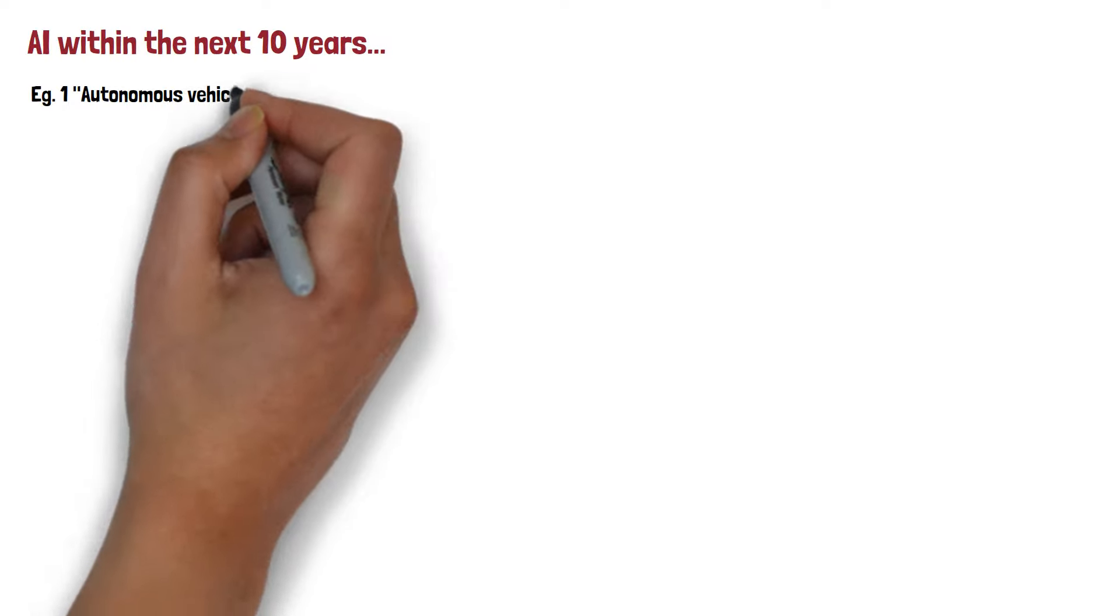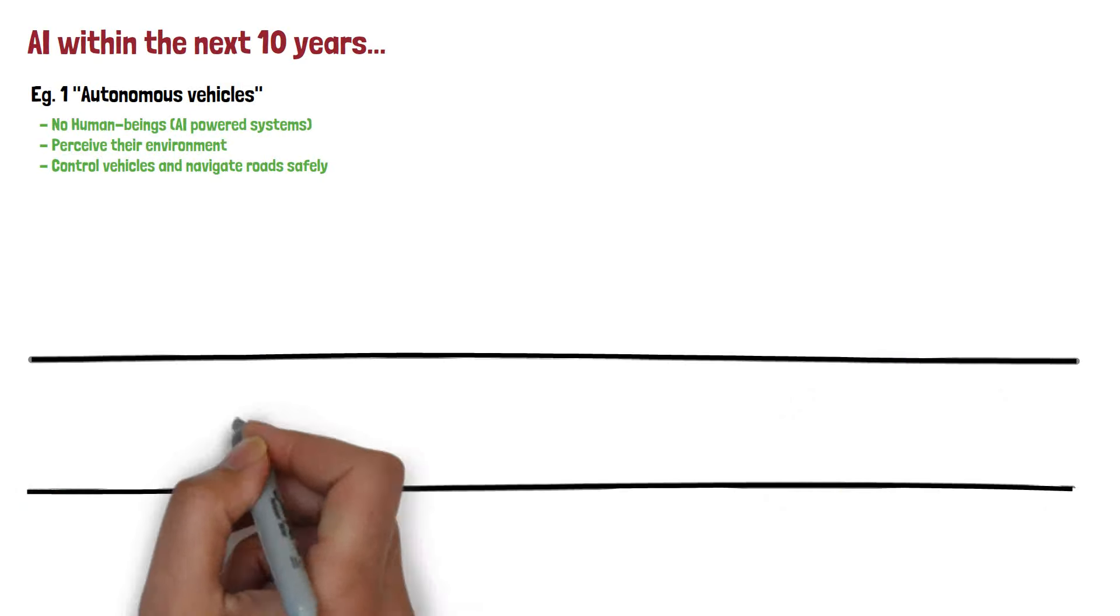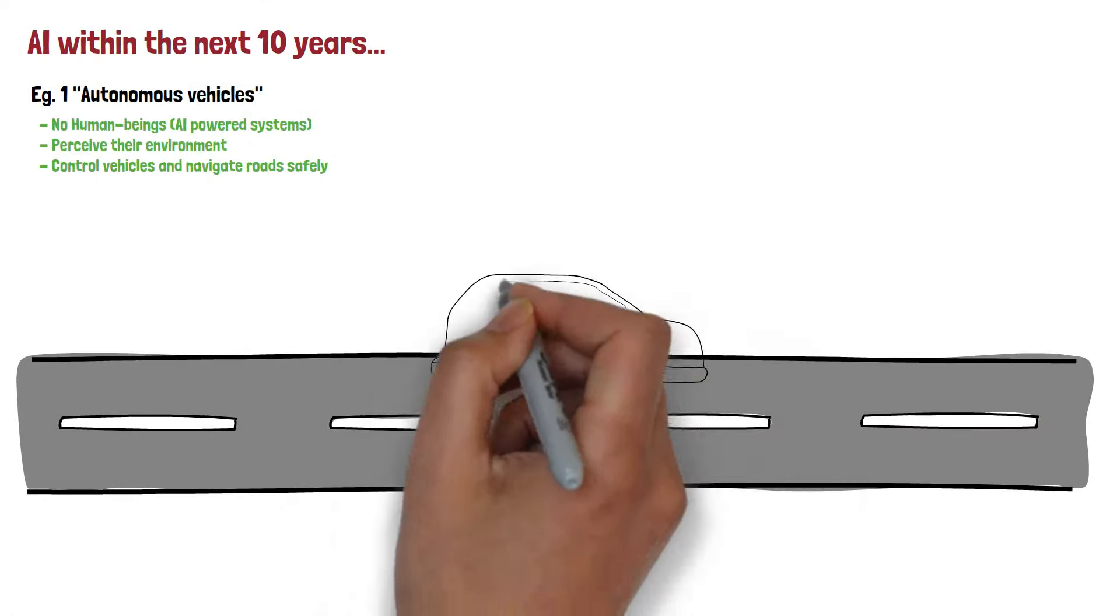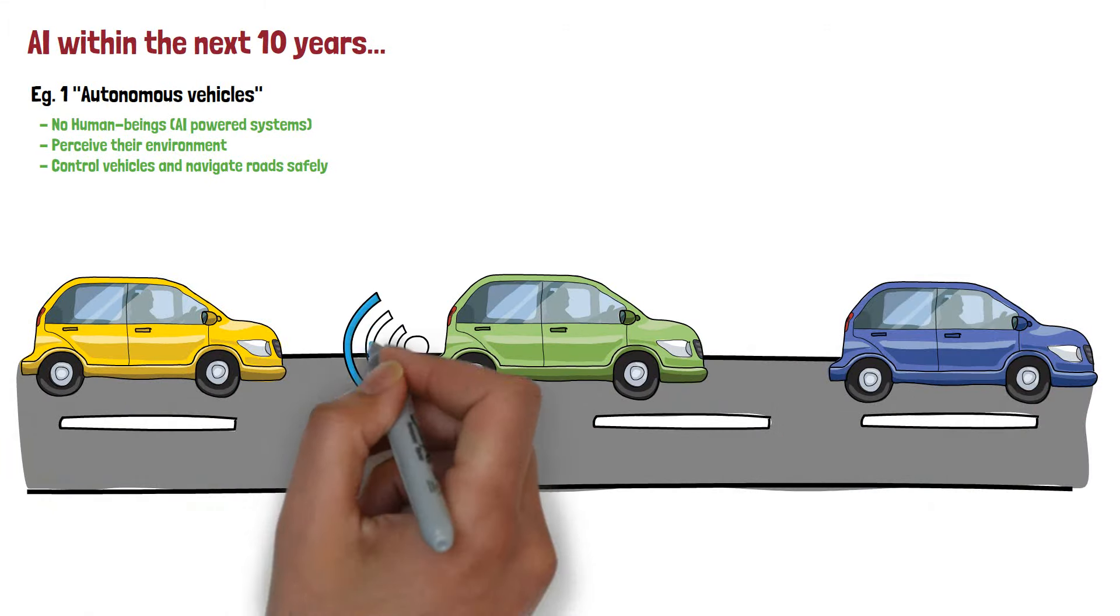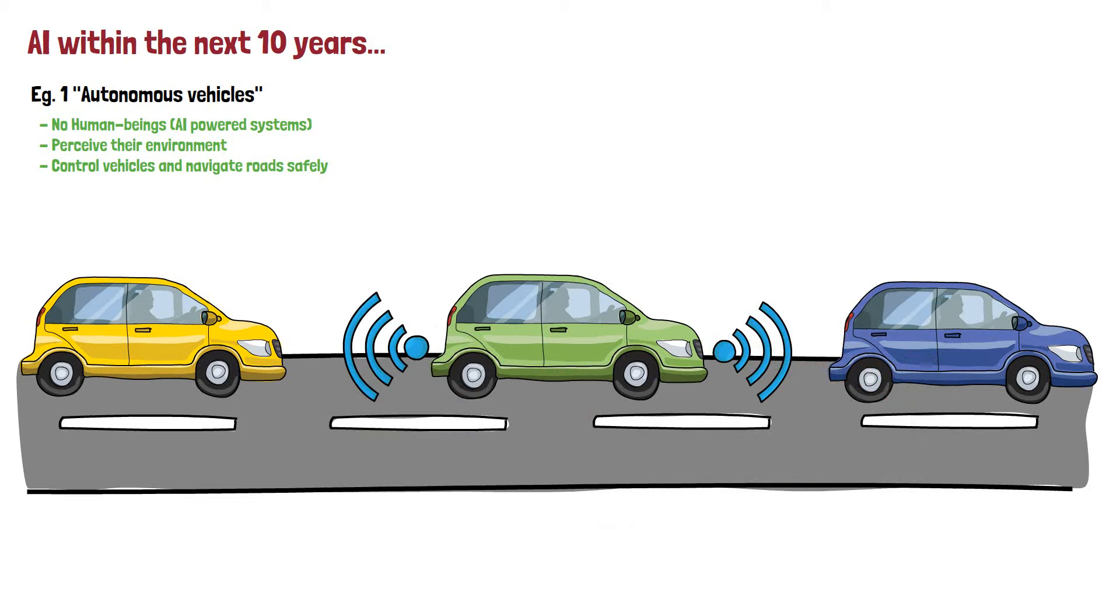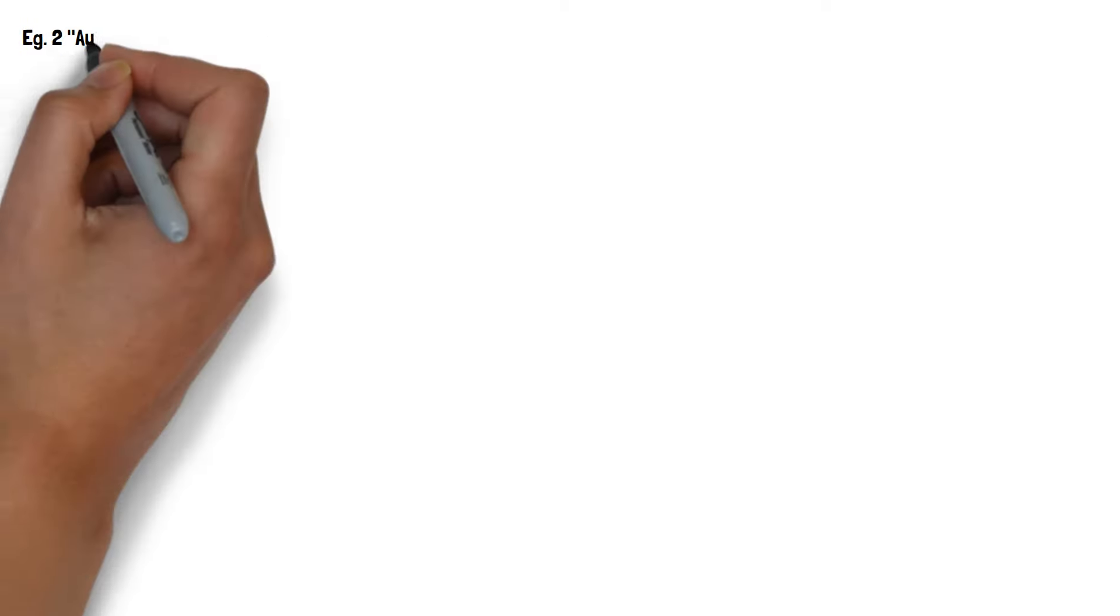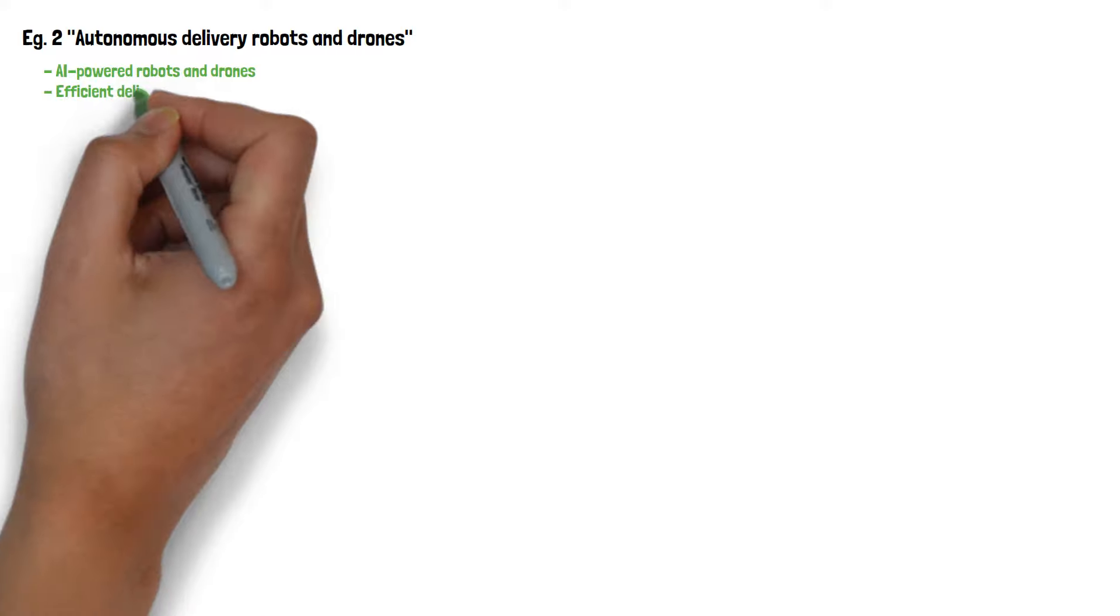Autonomous vehicles. Self-driving cars and trucks are powered by AI systems that can perceive their environment, make decisions, and control the vehicle's movements to navigate roads safely.